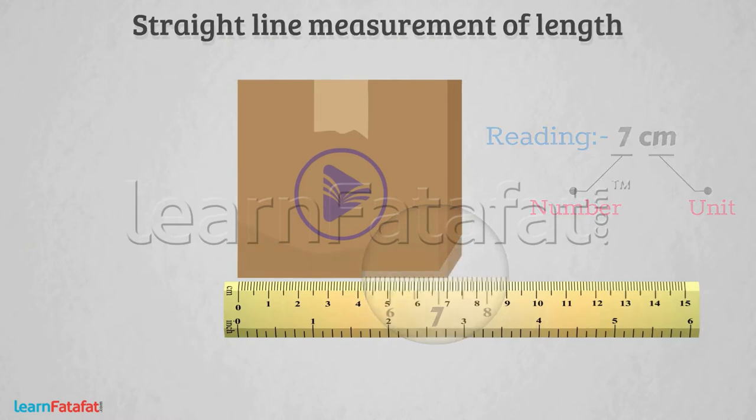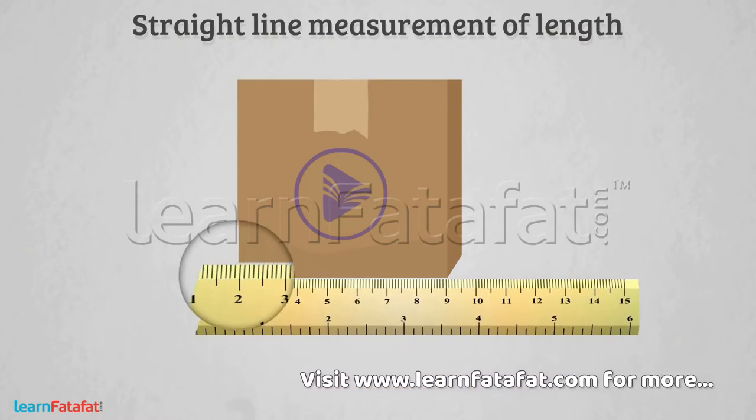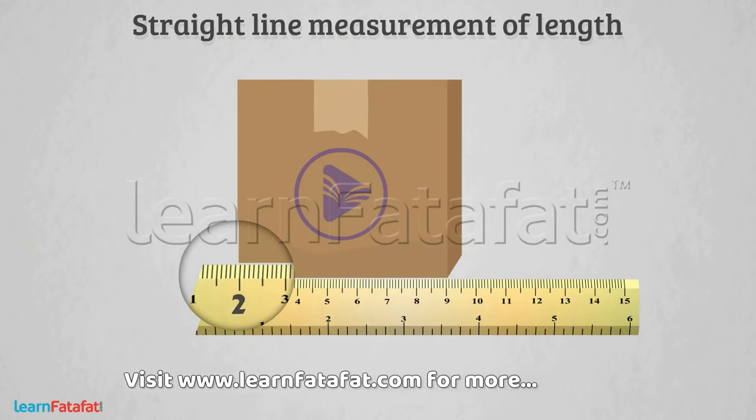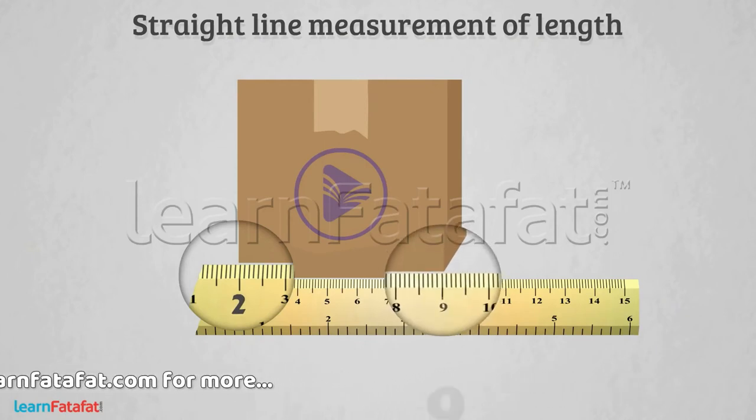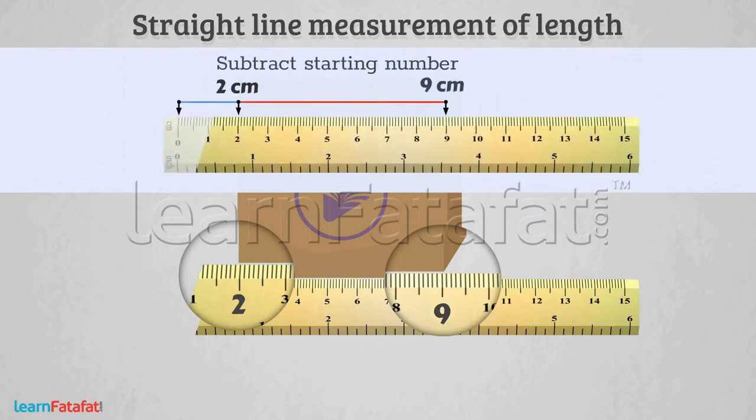It is possible that the end of the tape is broken and there is no zero mark. In such case, start measuring from any full mark present on the scale. Suppose we measure from number 2. Now, the reading at other end of the box is 9. However, it is not the correct reading. To make it correct, we have to subtract the starting number from the ending number.